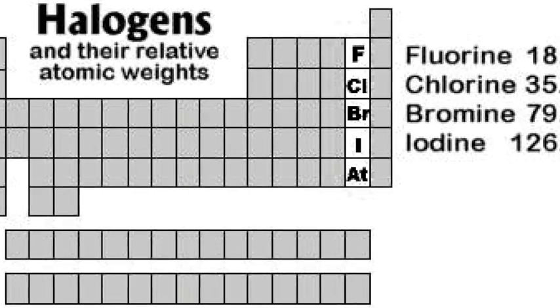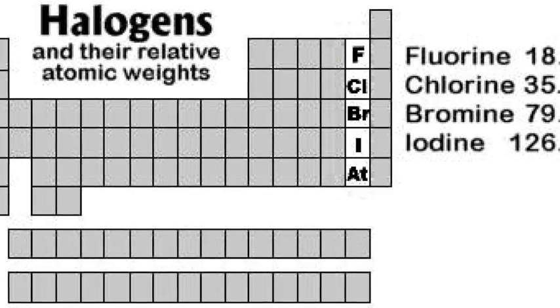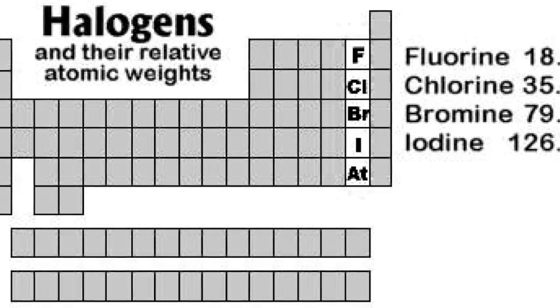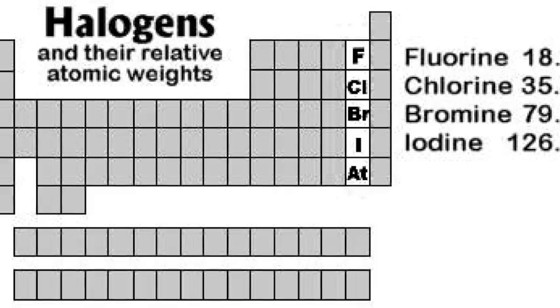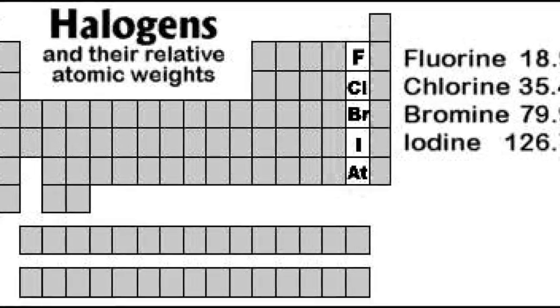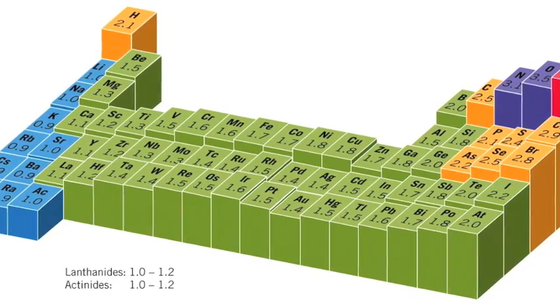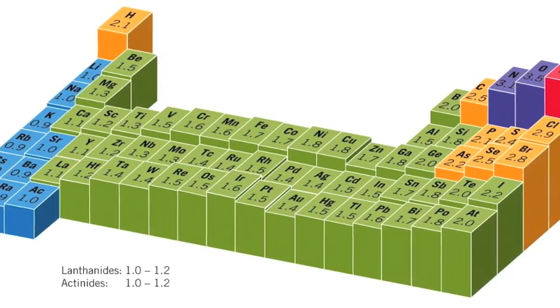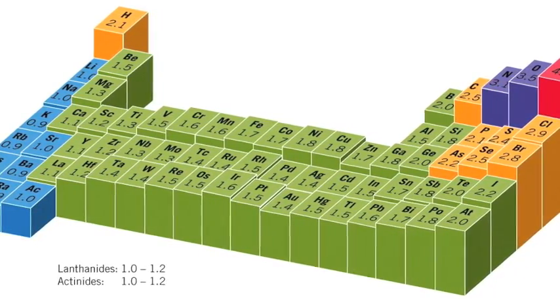As halogens, all the elements under this group have seven valence electrons. They only need one more to complete their orbit. And they will get that electron any way they can. And because they would be willing to do anything for this electron, they have a high number of electronegativity.